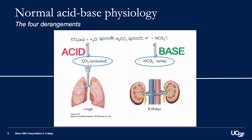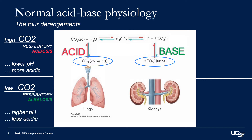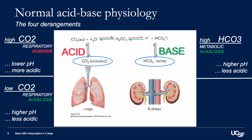We'll explore the four major derangements in acid-base physiology, starting with respiratory acidosis. When there's too much carbon dioxide in the blood, it becomes more acidic and the pH drops. When there's too little carbon dioxide in the blood, we call that respiratory alkalosis, and the blood is less acidic. Bicarbonate level, when it's too high, causes metabolic alkalosis, and when it's low, causes metabolic acidosis.